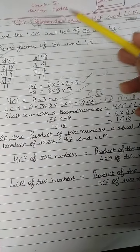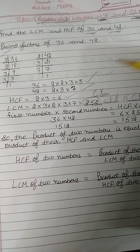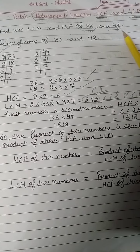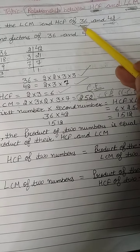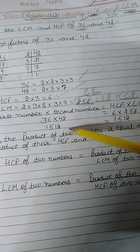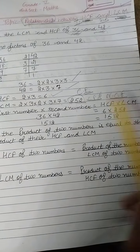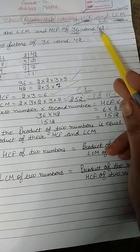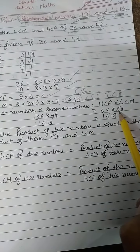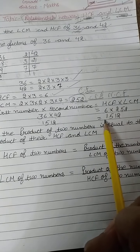Now we are talking about the relationship between HCF and LCM. The first number is 36 and the second number is 42. The HCF of these numbers is 6 and the LCM is 252. The relationship is: first number multiplied by second number equals HCF multiplied by LCM. So 36 × 42 gives 1512.